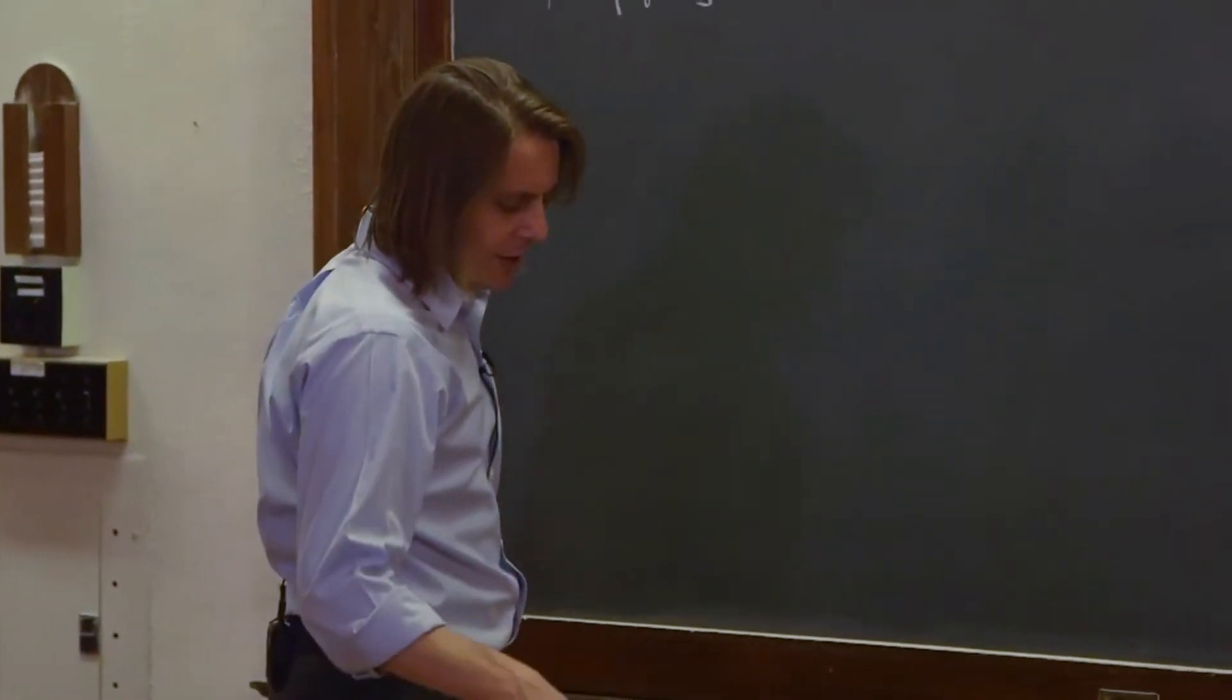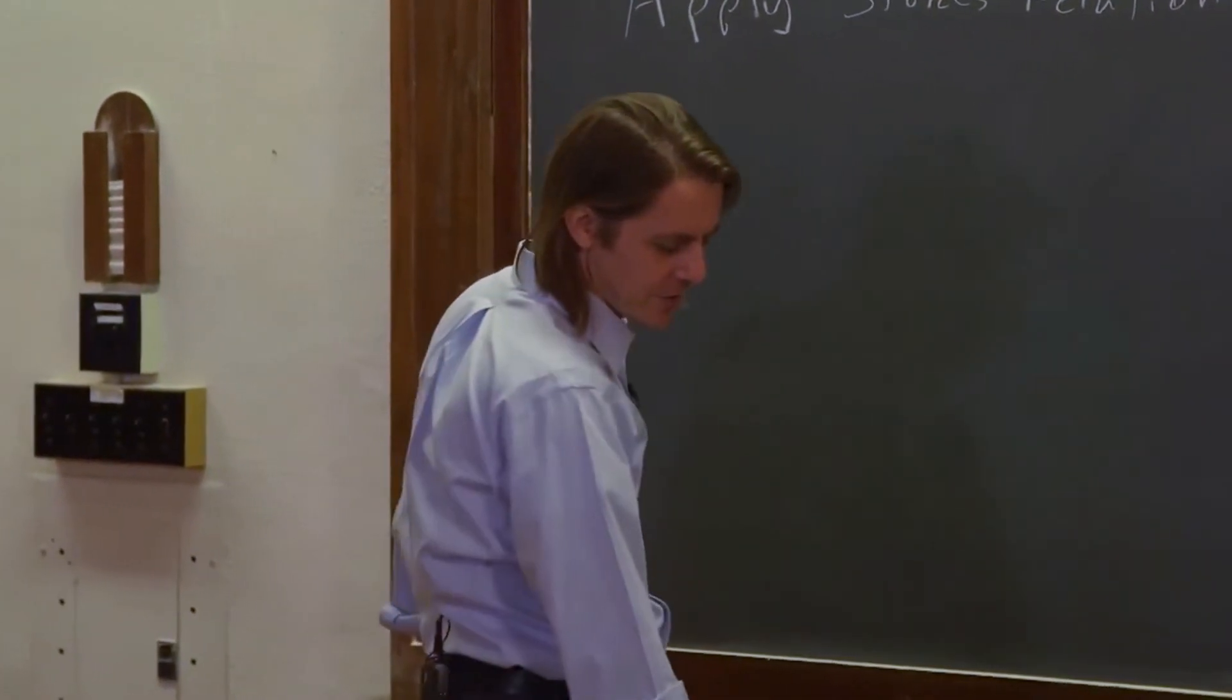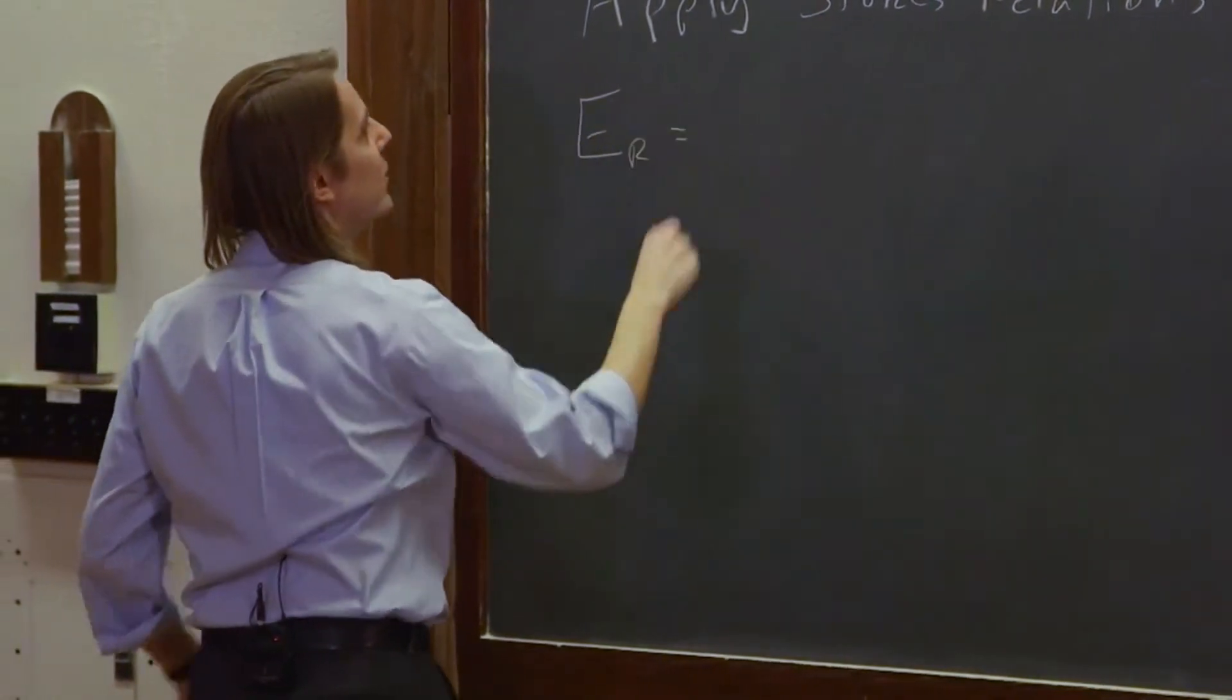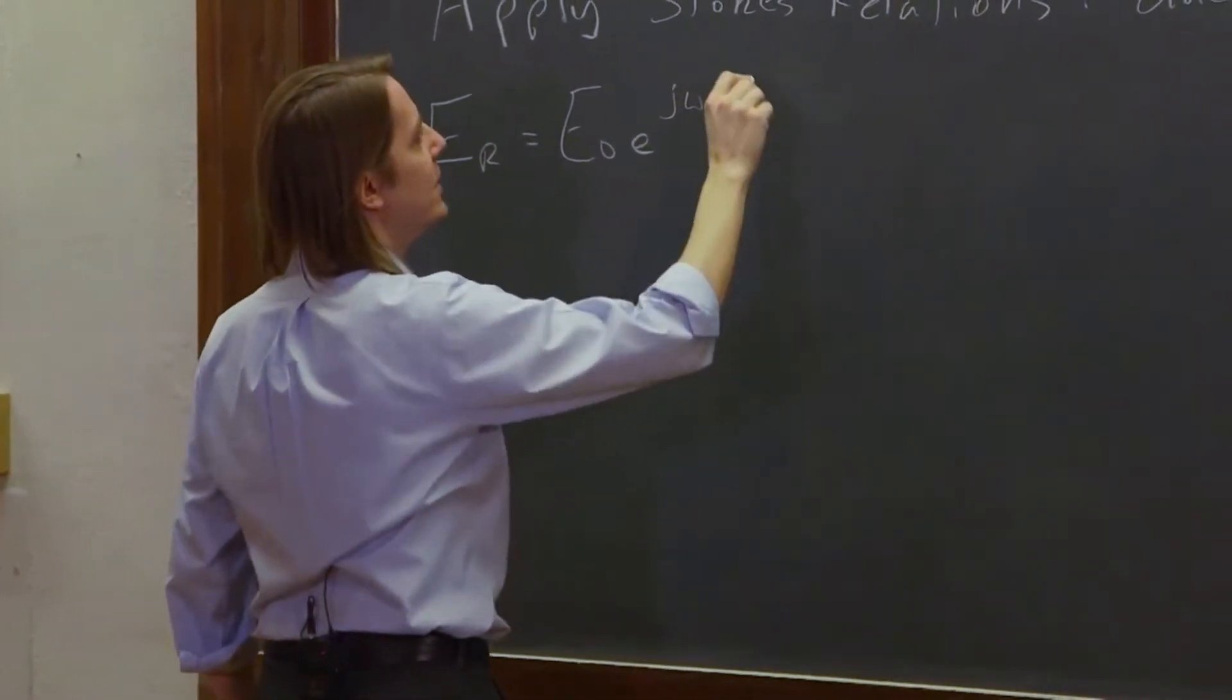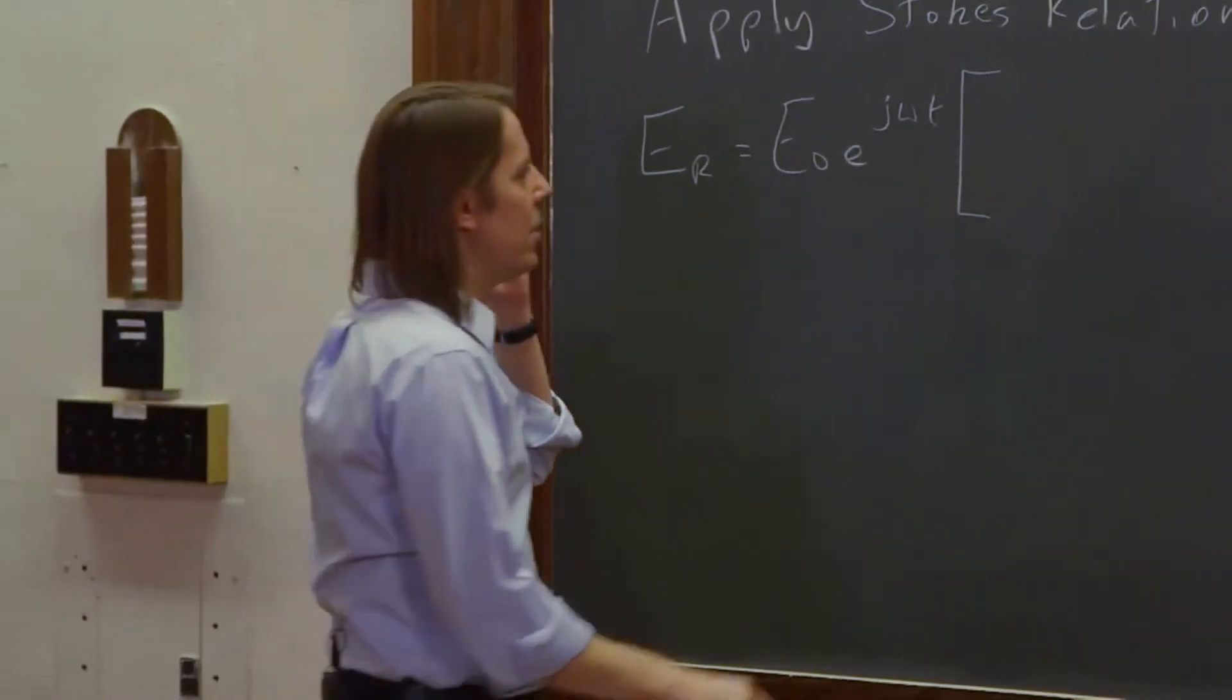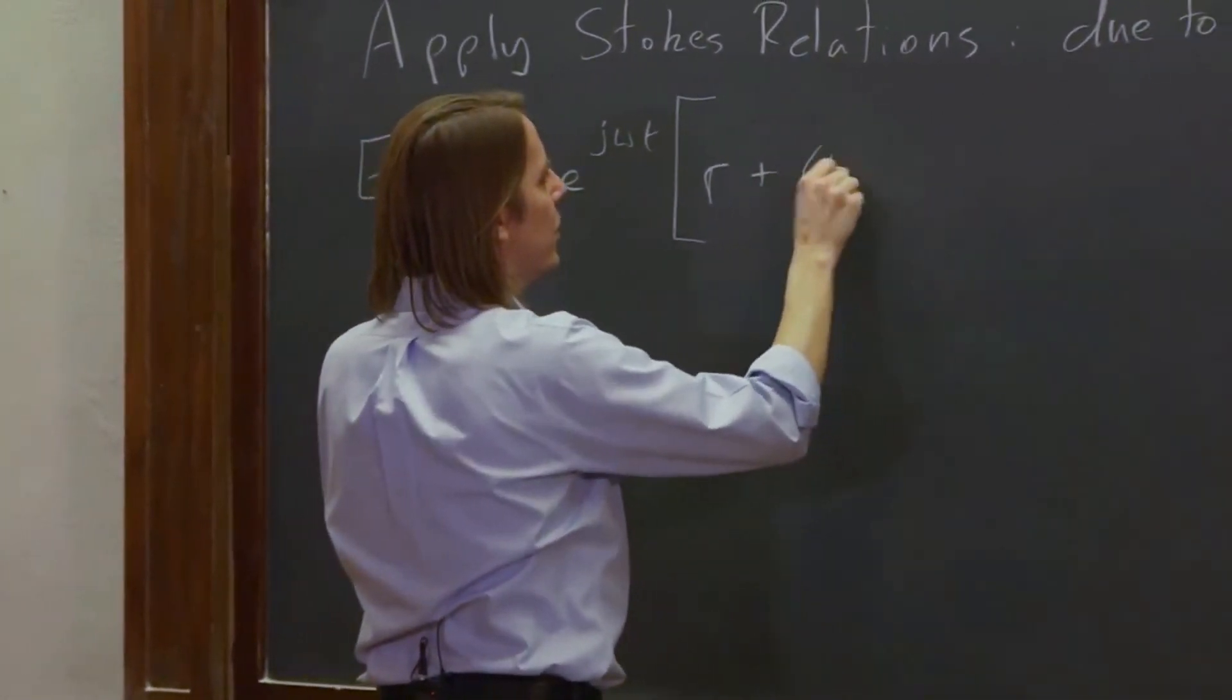We're going to use that to basically what we're trying to do is instead of having four variables, r, r prime, t, and t prime, we're reducing it and getting it down to just the ones without the primes. So we have er, as I've been writing it, is e naught e to the j omega t, right? And it's r plus, and then it's t, t prime, but we're going to make that one minus r squared.